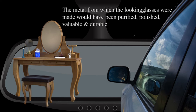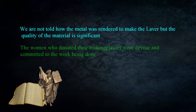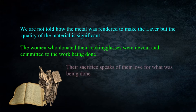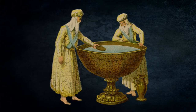Mirrors are something we're familiar with today. In the ancient world they would have been valuable — the metal purified and polished so a person could see themselves. The bronze used would be durable and suitable for an outdoor environment. Of notice is that the women who donated these were devout, demonstrated by the fact that they assembled at the door of the tabernacle. Although the Hebrews had spoiled Egypt when they departed, there wasn't a way to easily replace something once it was gone. These women were willing to part with a valuable personal object, giving it to the work of the Lord. Their sacrifice speaks of their love for what was being done.